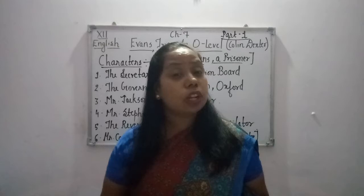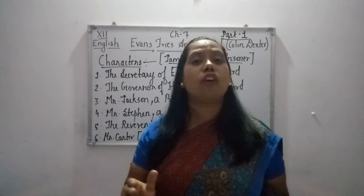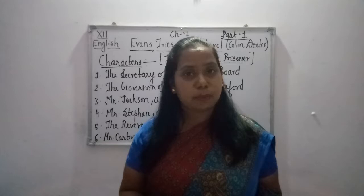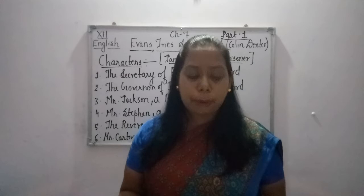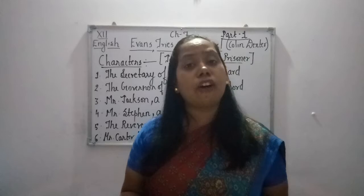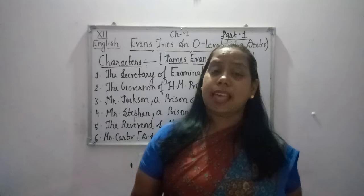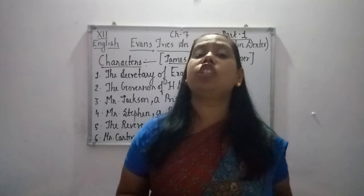Now take out your books and we will read the chapter very slowly, otherwise you will lose the charm. Before we read, it is noted: 'All precautions have been taken to see to it that the O-Level German examination arranged in the prison for Evans does not provide him any means of escape.' All jail authorities believed it could be another plan of Evans to escape, so they took due precautionary measures. It was in early March when the Secretary of the Examination Board received a call from Oxford Prison.